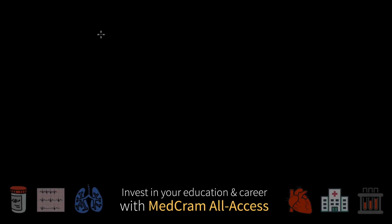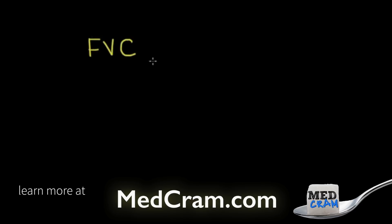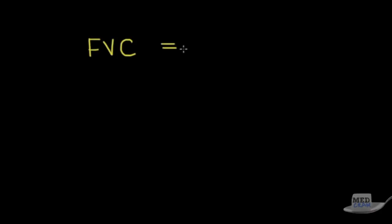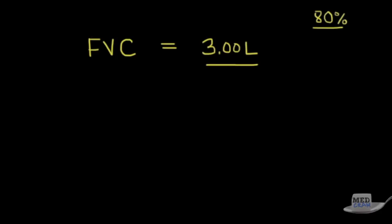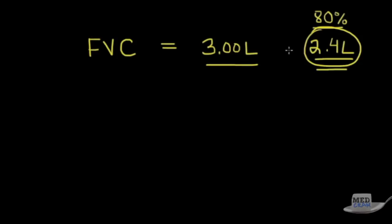Let me give a concrete example. Say we plug in those four values and come up with a predicted forced vital capacity of 3.00 liters. Eighty percent of 3.00 liters is 2.4 liters. So if your measured forced vital capacity is below 2.4 liters, that is considered abnormal. Conversely, if your value is greater than 80% of the predicted, you are normal.